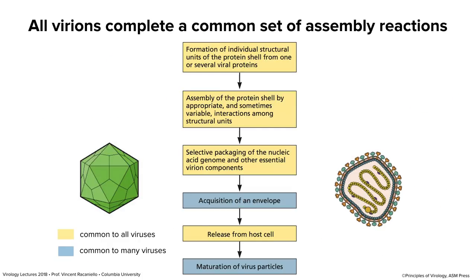We're going to go over the principles. Here are our two kinds of viruses: naked and enveloped. There are a series of steps every virus particle has to go through to complete assembly. It starts with the formation of individual proteins, those folding into structural units, and eventually forming the capsid. Another important step is packaging of the nucleic acid — what gives specificity so viruses only package viral nucleic acid and not cellular nucleic acid.